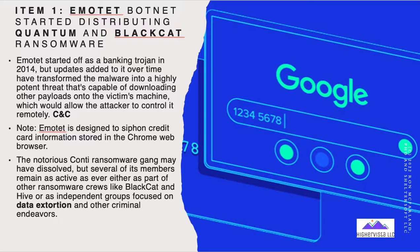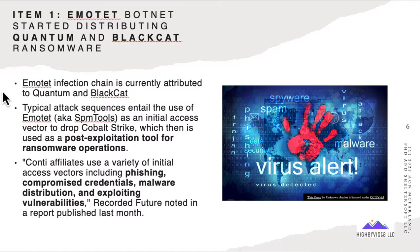Malware can be distributed in many different ways — via email attachments, downloadable files on the internet, or when a user follows a link to a website. Exploiting vulnerabilities: an exploit is specially crafted code that adversaries use to take advantage of certain vulnerabilities. Exploit kits are tools embedded in compromised webpages that automatically scan a visitor's machine for vulnerabilities and attempt to exploit them. A post-exploitation tool refers to any actions taken after a session is opened from a successful exploit or brute force attack. Conti affiliates use a variety of initial attack vectors, including phishing, compromised credentials, malware distribution, and exploiting vulnerabilities.